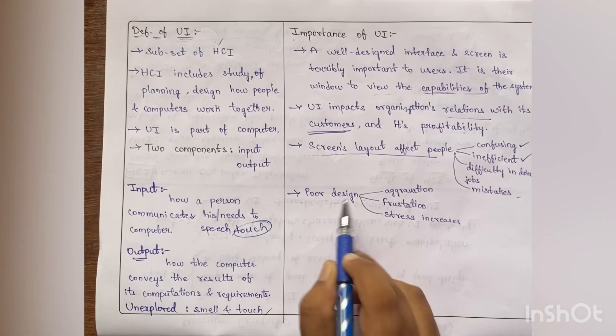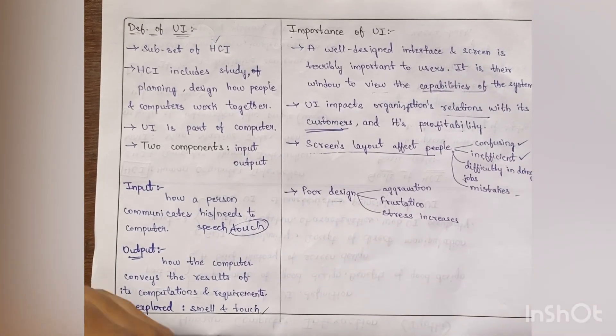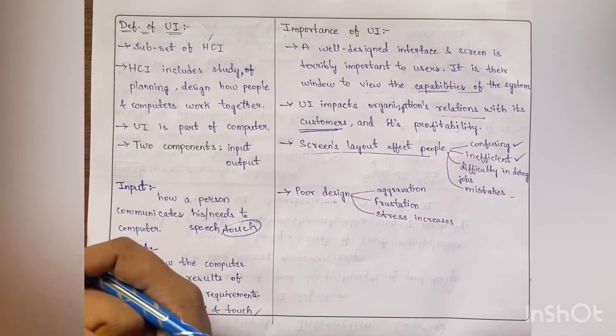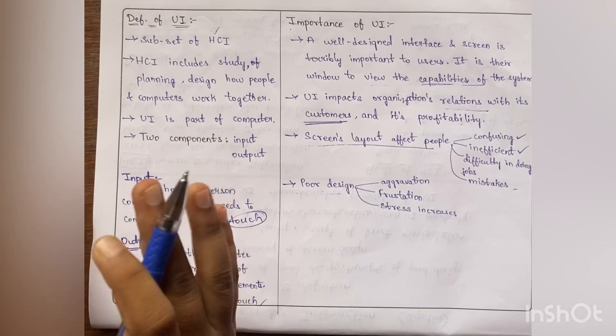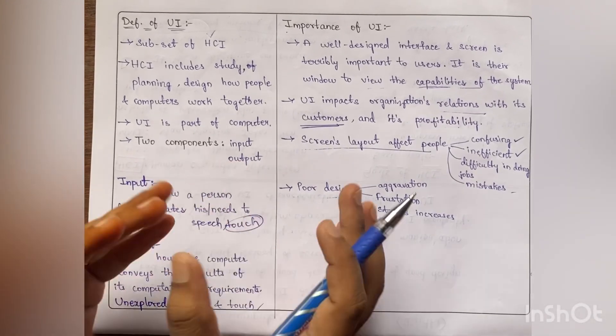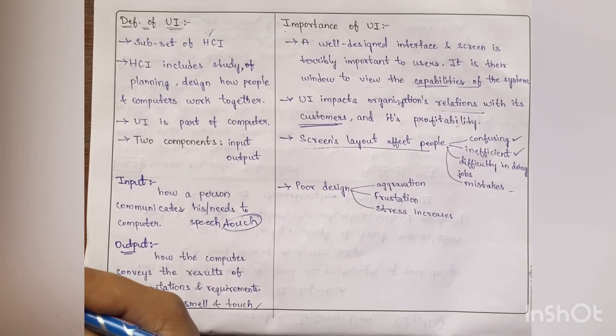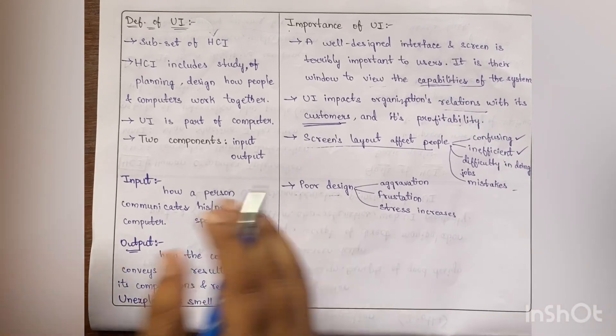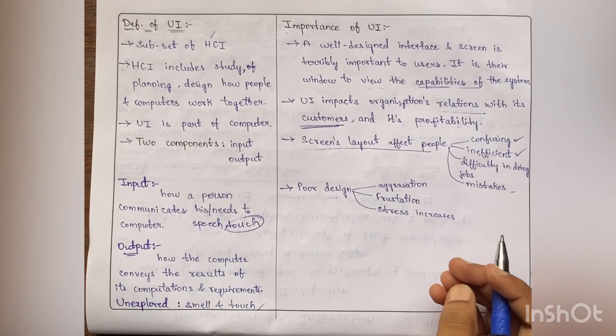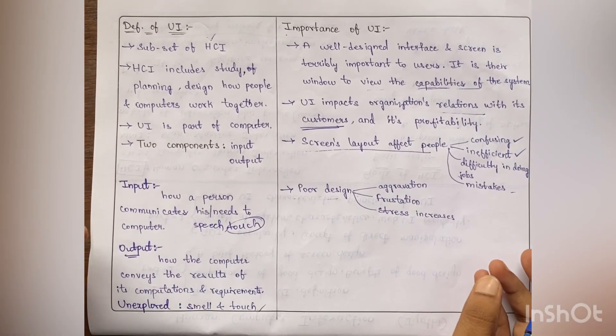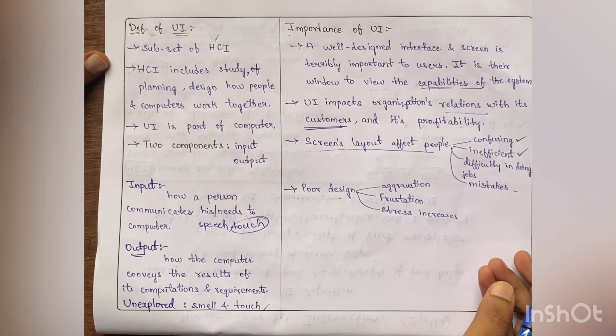So screen layout is one of the important things. And other one is proper design. When the design is not proper, we feel frustrated, it's always confusing. Because of that reason, we cannot complete all our tasks in time. Frustration is increased, stress is increased. So hope you got the importance of UI.